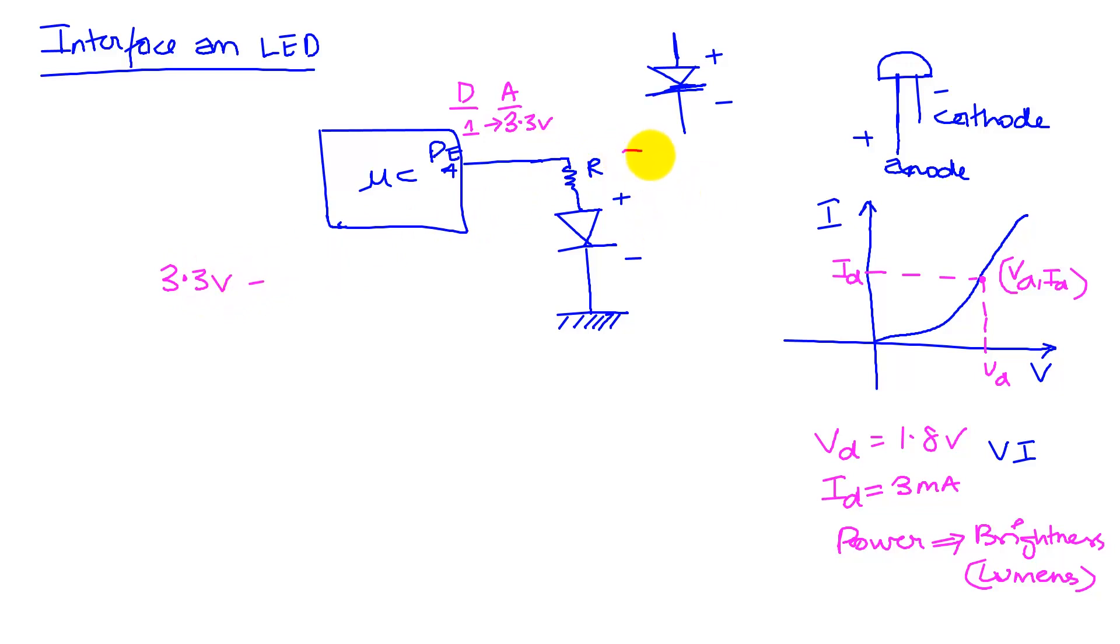Remember that this is our target operation, to get current ID to flow through this. That's minus ID times R. That is the drop across this resistance. We have minus VD equals 0 because that's my ground. That's our voltage equation.